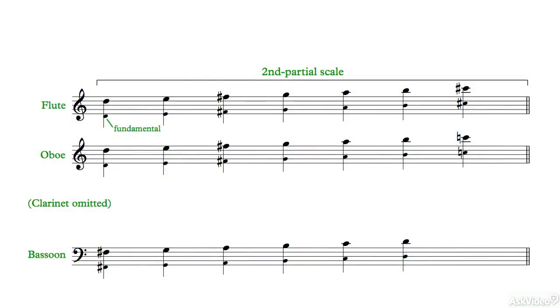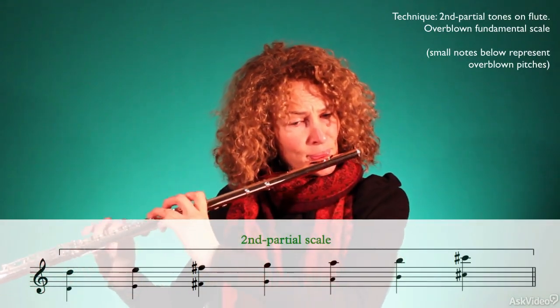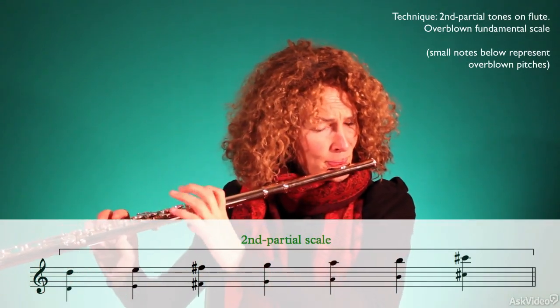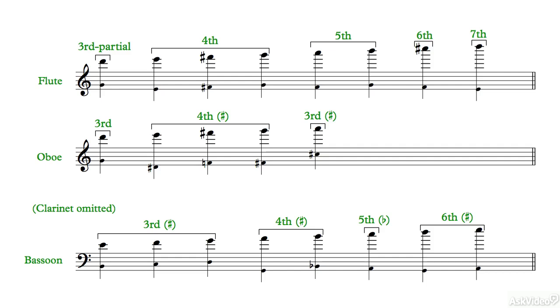For flutes, oboes, saxophones, and bassoons, the next register is achieved by overblowing to the second partial an octave higher. The registers above this are played by ever-increasing divisions of the harmonic series, overblowing to higher partials until the mechanics of embouchure and instrument design reach their limit.